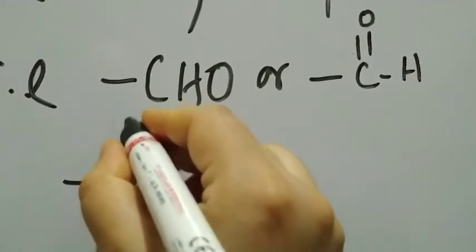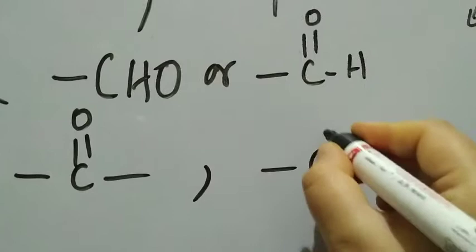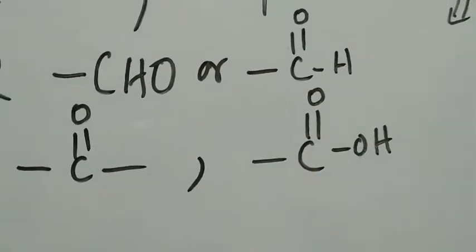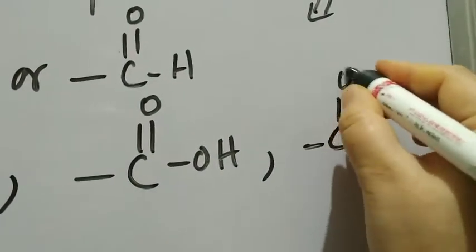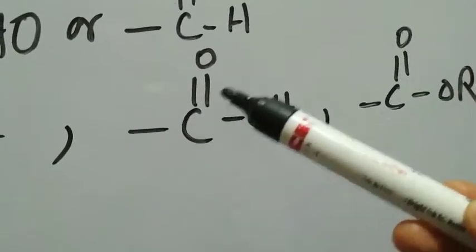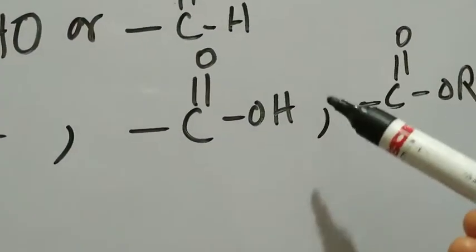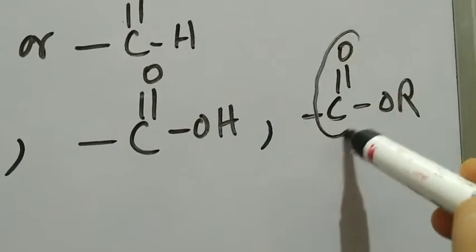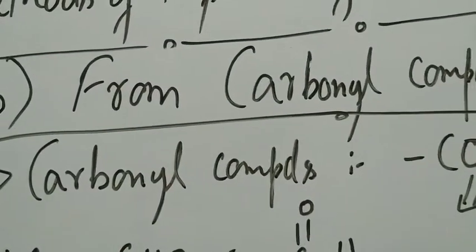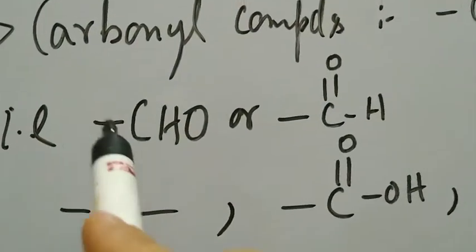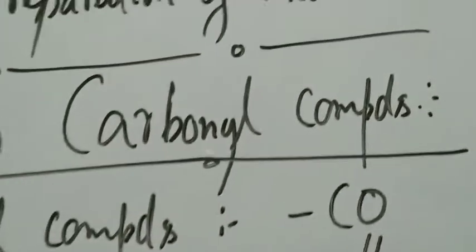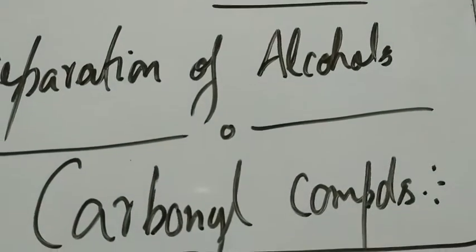Which functional groups fall under carbonyl compounds? We have aldehydes — they have a C=O group. Ketones fall under this category — they also have a C=O group. Carboxylic acids are carbonyl compounds — they contain a C=O group. And all the derivatives of carboxylic acids, in which H is replaced by something else, are also carbonyl compounds because they contain a C=O group. In this method we will take esters specifically.